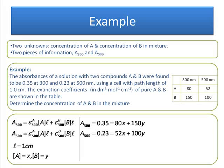So I can now put in my values. So my absorption at 300, I'm told that's 0.35, that's equal to the extinction coefficient of A at 300 - from the table that's 80 - times the concentration of A, that's x, that's 80x, plus the extinction coefficient of B at 300 - that's 150 - times the concentration of B, that's y, so it's 150y. And the same for A at 500.